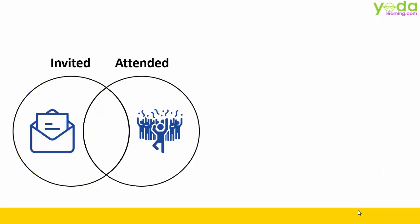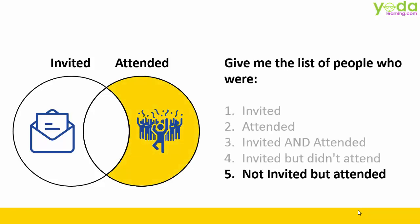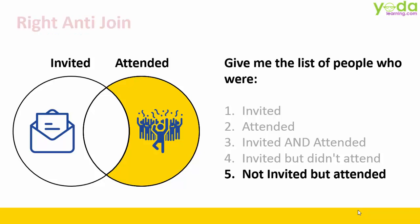Next, the most interesting set of people — those who did not get an invitation and yet gate crashed the party. In our case, this is what we refer to as Right Anti Join.